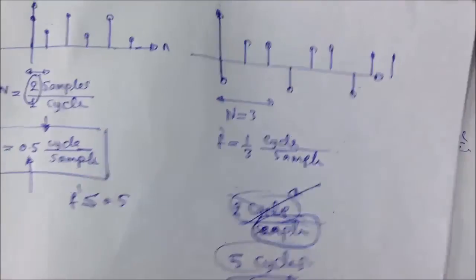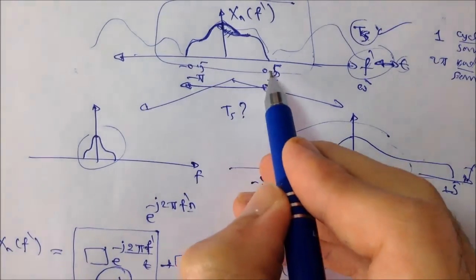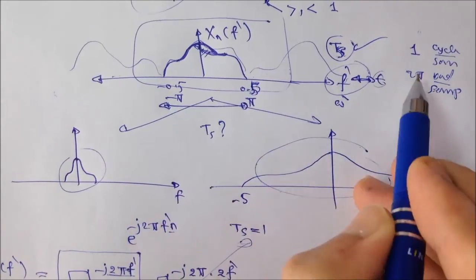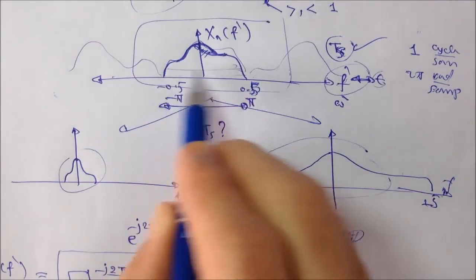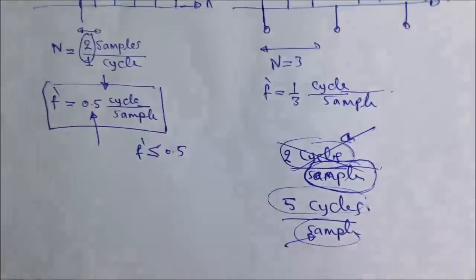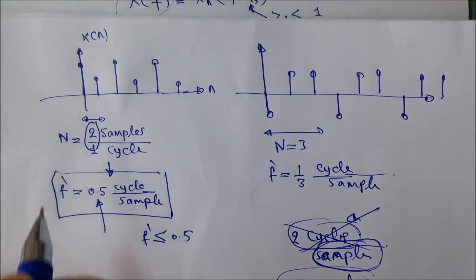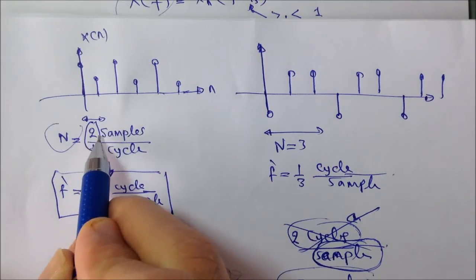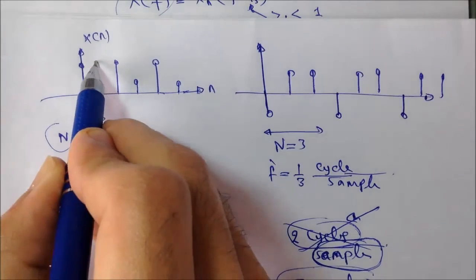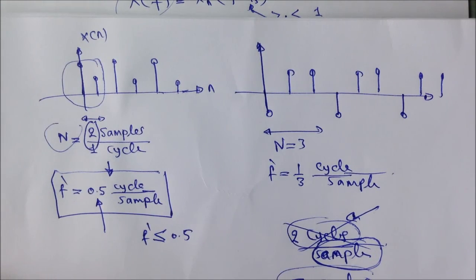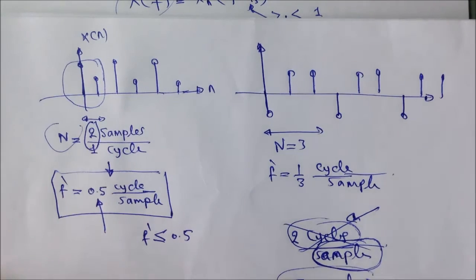Or 5 cycles per sample. Which means within each 1 sample, 5 cycles are completed. This is impossible. And you can't really determine that. 0.5 cycle per sample is the largest value that f prime can take. 0.5 is the largest value. And you can't think of a discrete signal that has n less than 2 samples per cycle. This is the least duration that a discrete periodic signal can have, which is 2.